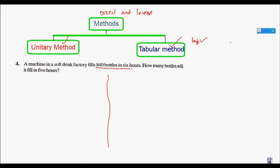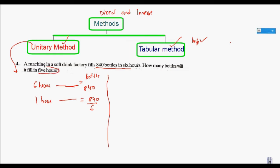Let me take one example using both methods. A machine produces 840 bottles in 6 hours. How many bottles will it produce in 5 hours? By unitary method: in 6 hours the number of bottles is 840, so in 1 hour it is 840 divided by 6. In 5 hours it will be 840 divided by 6, multiplied by 5. Simplifying: 840 divided by 6 is 140, so the answer is 700.